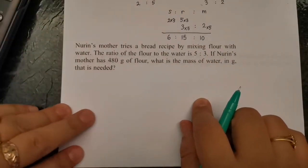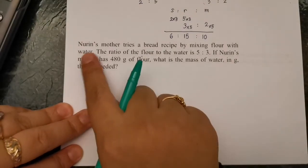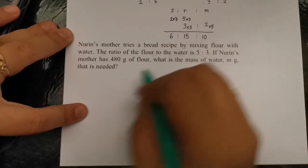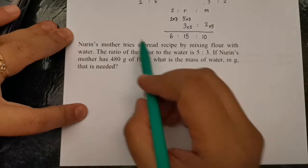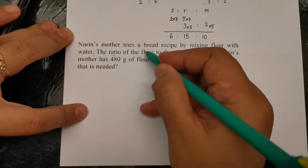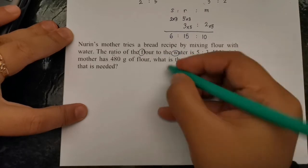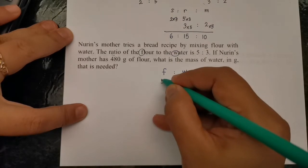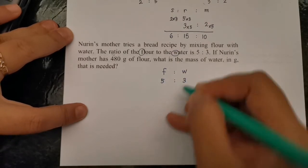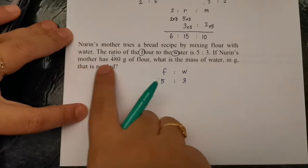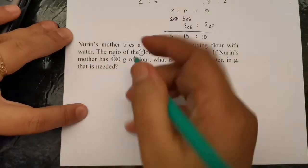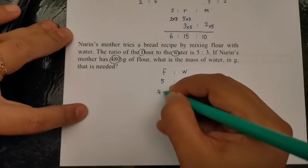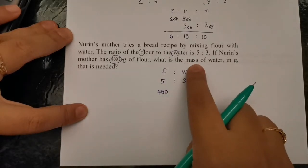Next, try to understand this question. Nurin's mother tries a bread recipe by mixing flour with water. The ratio of flour to water is 5:3. If Nurin's mother has 480 grams of flour, what is the mass of water needed?